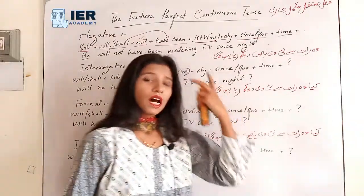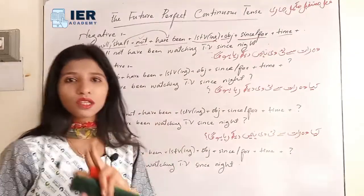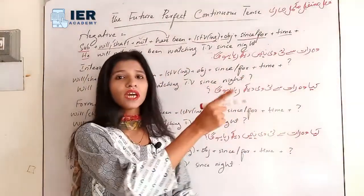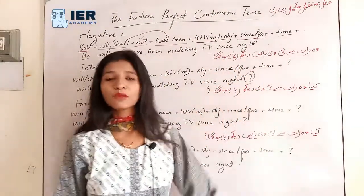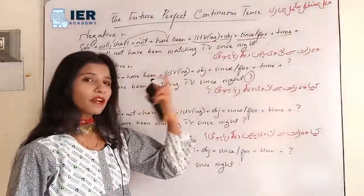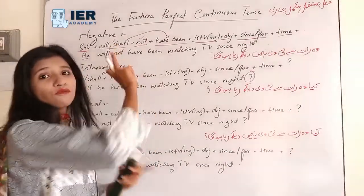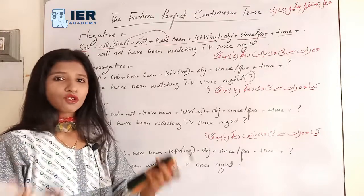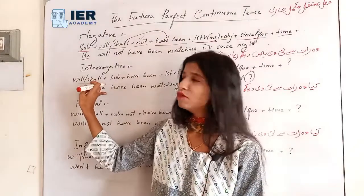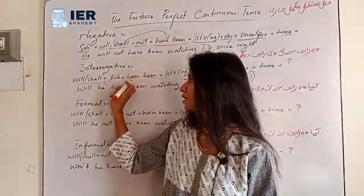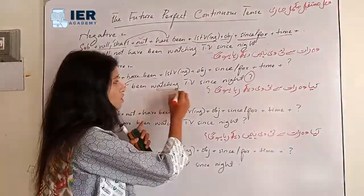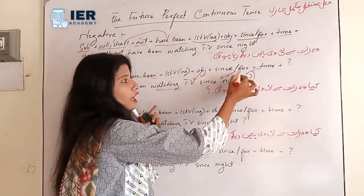Now interrogative — how we change this to a question. In interrogative, two things are very important: first, we bring the helping verb before the subject; second, we replace the full stop at the end with a question mark. The formula: Will/Shall + Subject + have been + First Form with -ing + Object + Since/For + Time + Question Mark. With subject 'he': will + he + have been + watching + TV + since night + ?